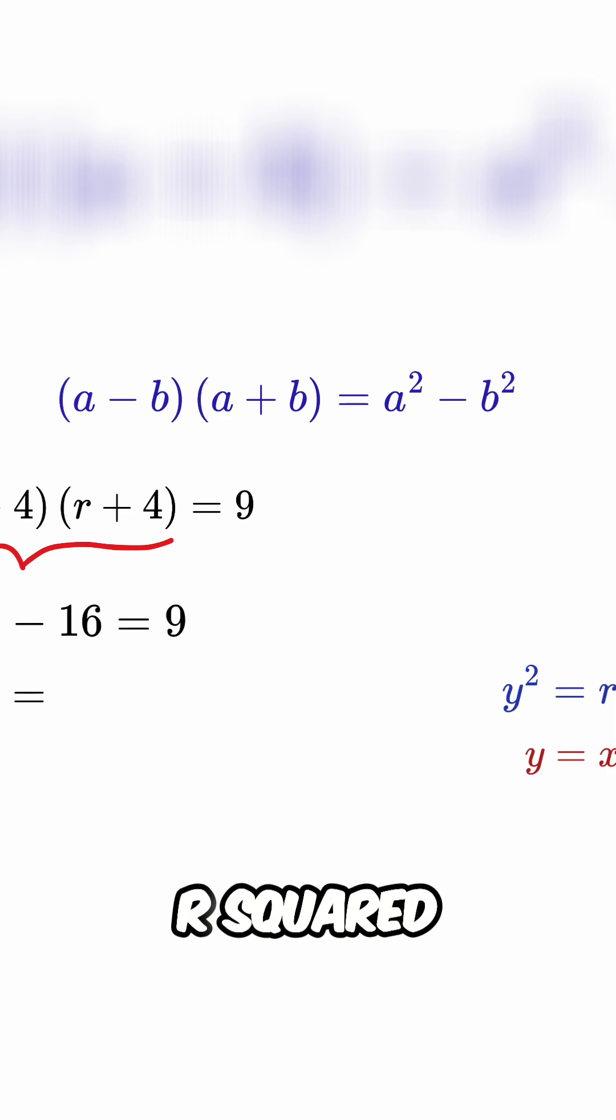Thus, r squared equals 16 plus 9 or 25 and therefore r equals plus or minus 5.